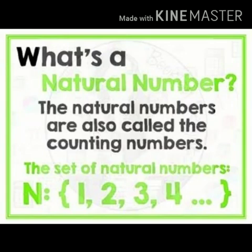The first definition is natural numbers. What is a natural number? The natural numbers are also called the counting numbers. The set of natural numbers is represented by capital N. The examples are 1, 2, 3, 4, and so on.